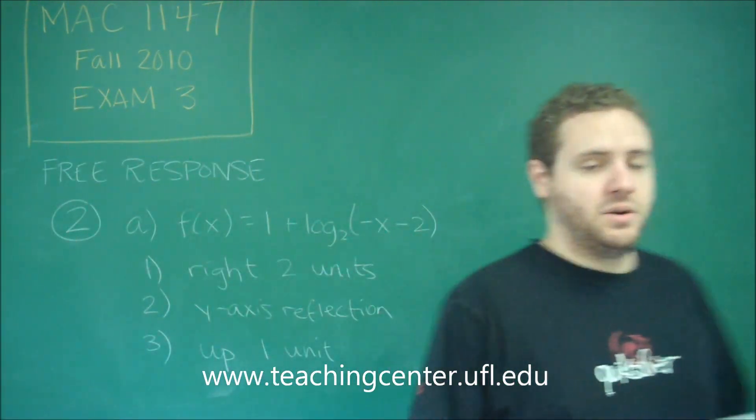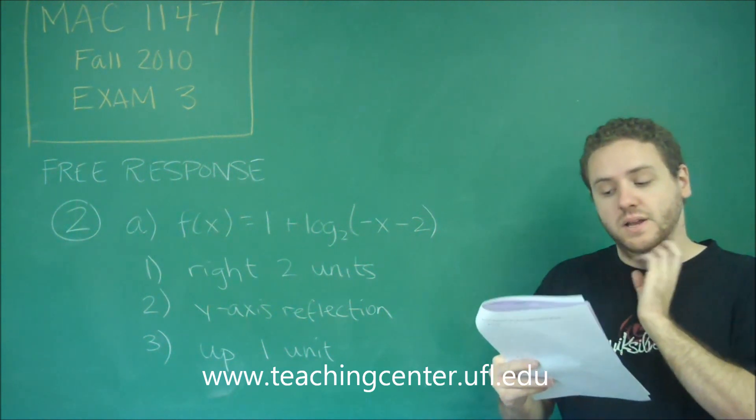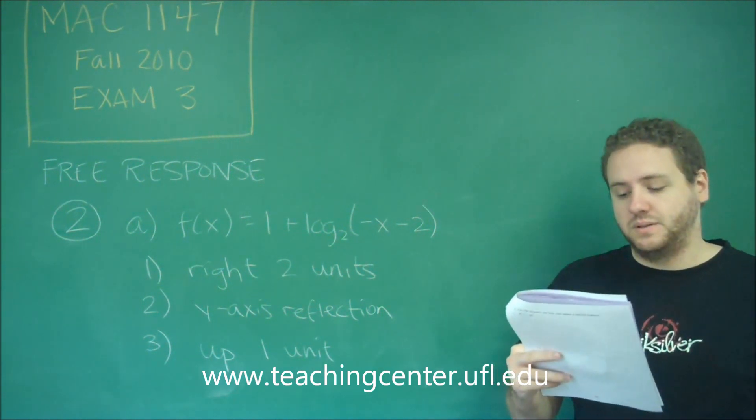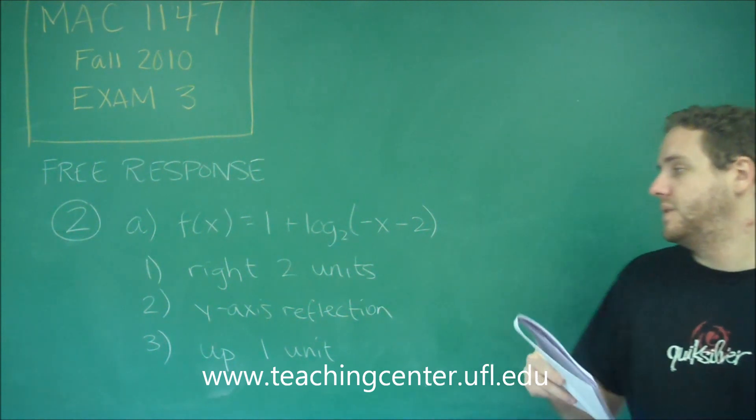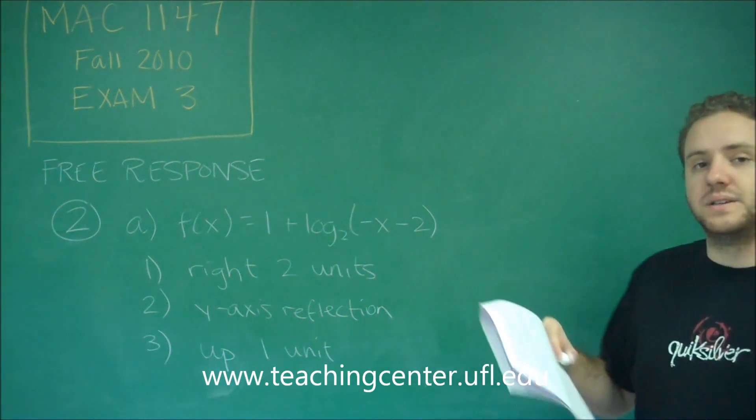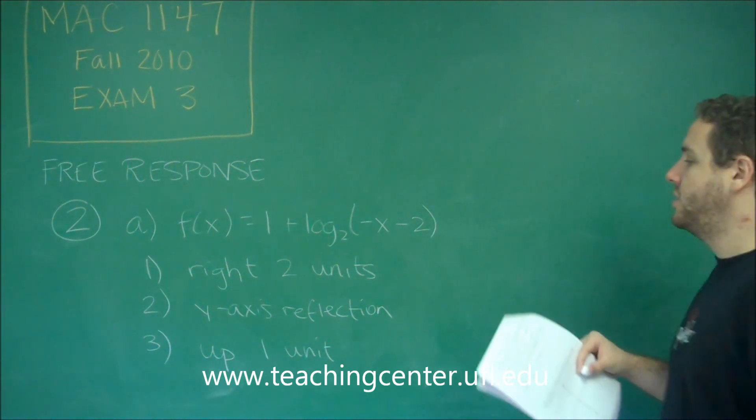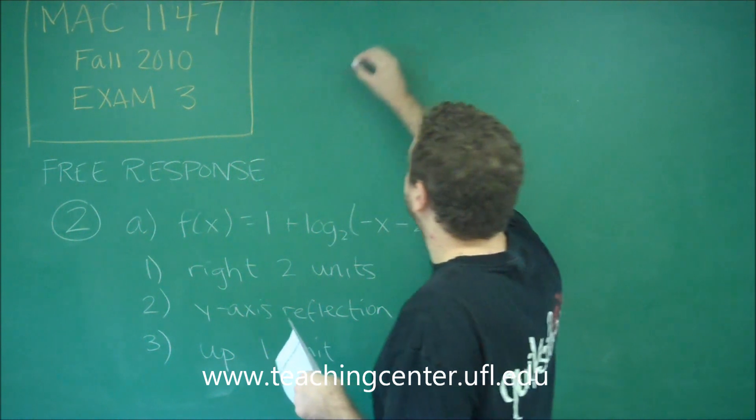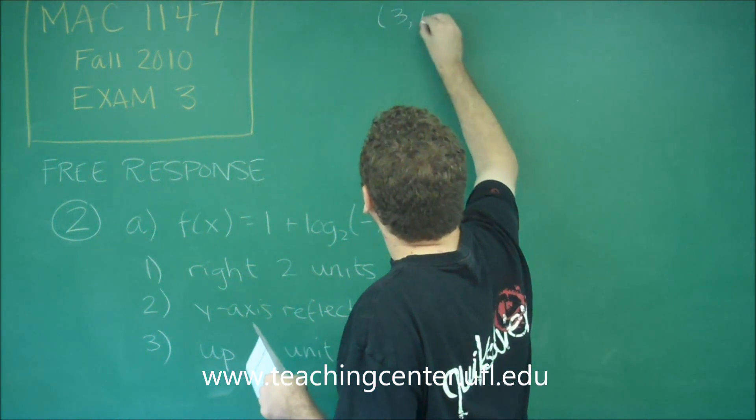So the reference point 1, 0 for letter b here is on the graph of the parent function. Therefore the new reference point after we do all these transformations we just have to do all of these things to it. So first we would shift it to the right. So instead of 1, 0 it would become 3, 0.